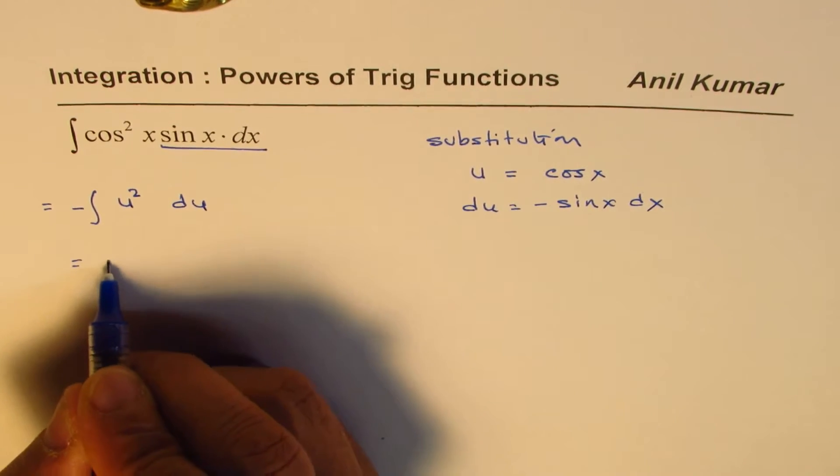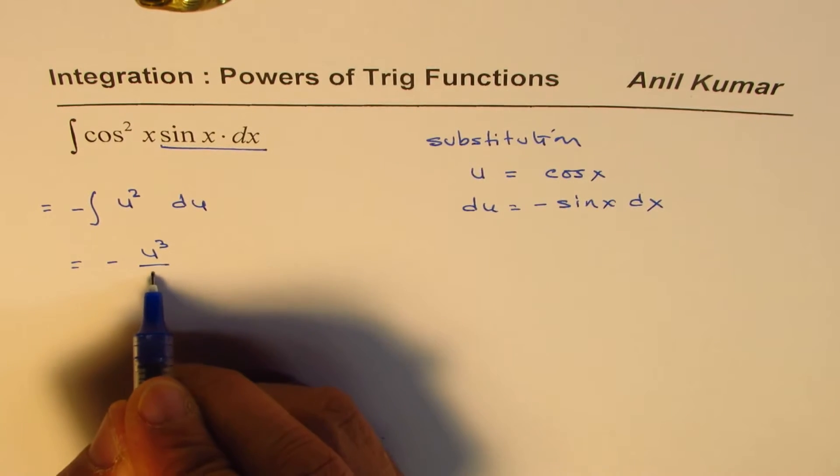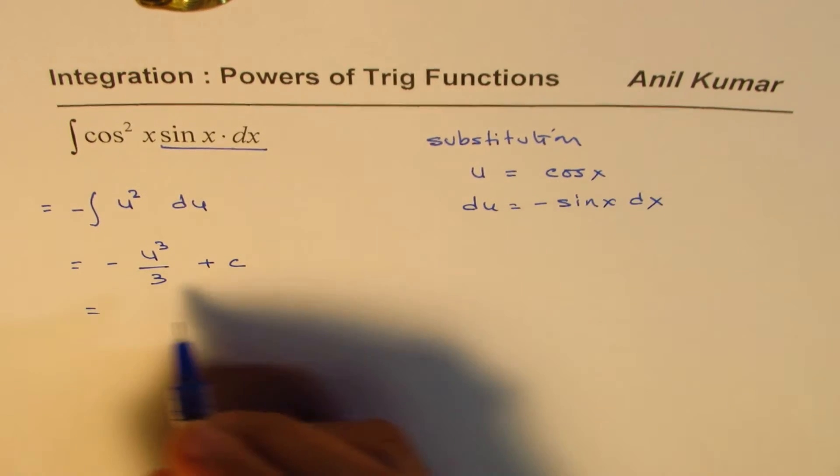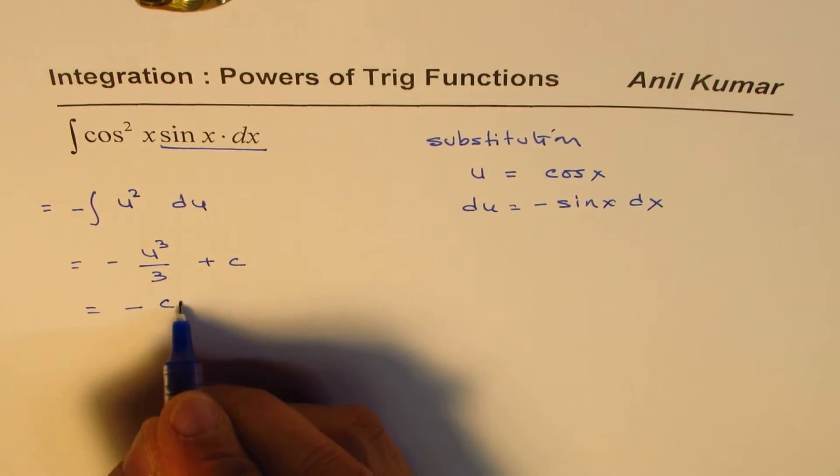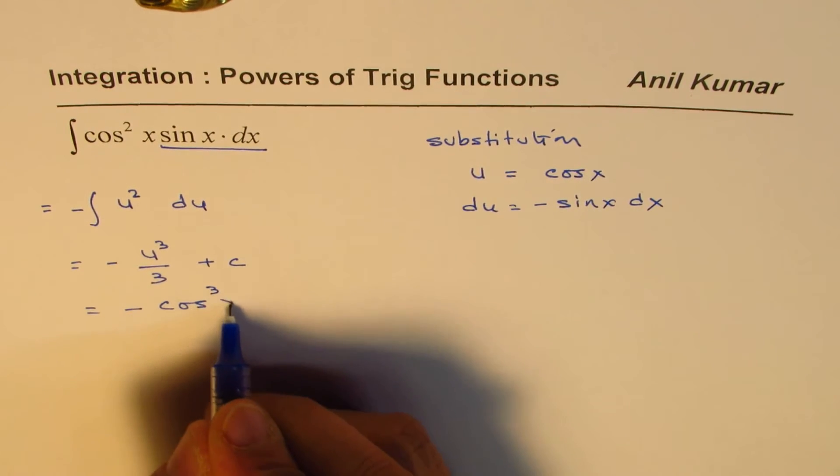So the integral for this is minus u³ divided by 3, right, plus c. u is cos x, so we can write this as minus cos³x divided by 3, plus c.